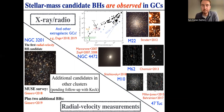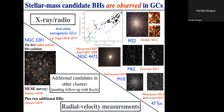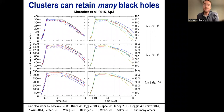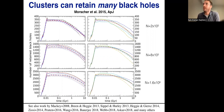Question from Arindo: What do the different colors signify in the previous slides? The colors represent different assumptions about a few cluster parameters — a few different assumptions about the metallicity, and a few different assumptions about the initial concentration of the clusters. The different panels show the simplest thing, which is simply the number of stars, and within a cluster of a given number of stars, there are additional theoretical parameters that can tweak slightly the evolution of the black hole population. I'll talk about this in a little more detail on a couple of later slides.